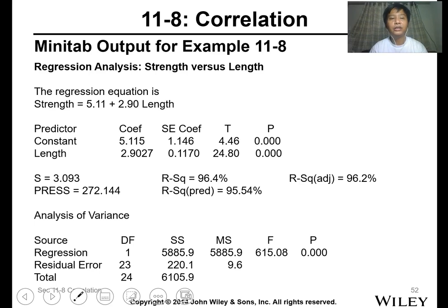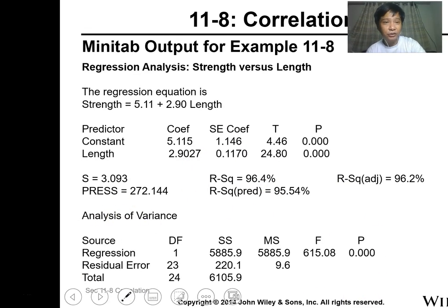So the Minitab output, how will you see it? This is the equation, this is the coefficient of the constant, this is the slope, this is the SE, the error, this is the T value. So you can see here the R squared, 96.4%. This is the adjusted. But usually we just use the R squared value. This is the analysis of variance.